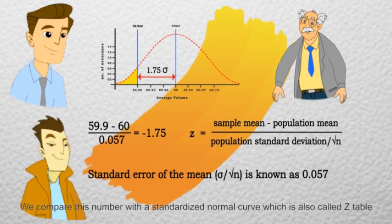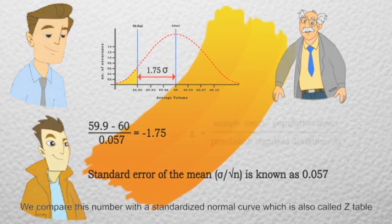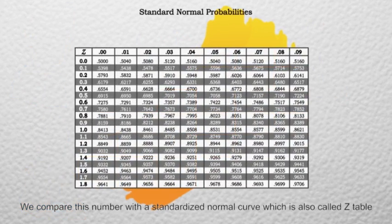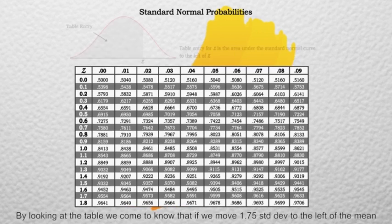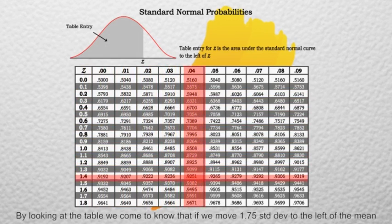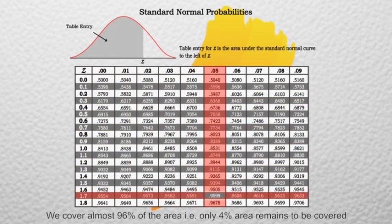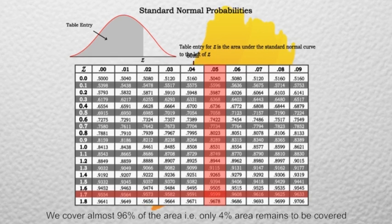We compare this number with a standardized normal curve which is also called Z table. By looking at the table, we come to know that if we move 1.75 standard deviations to the left of the mean, we cover almost 96% of the area.